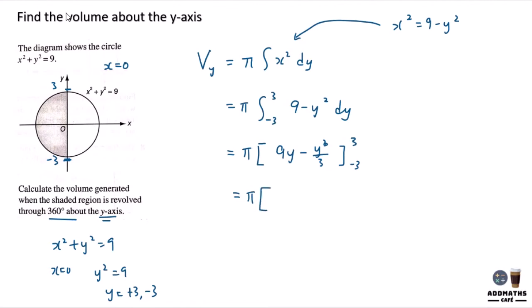And then you will have 27 minus 27 over 3 minus negative 27 minus negative 27 over 3. So in this case, by using calculator, you will get an answer of 18 plus 18. And at the end, you will get 36π units cubed as the volume.